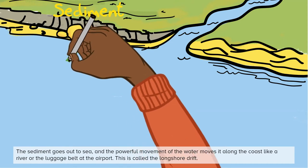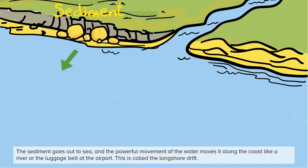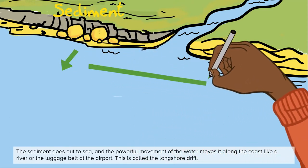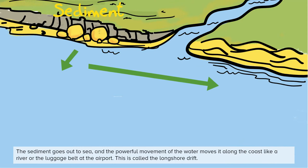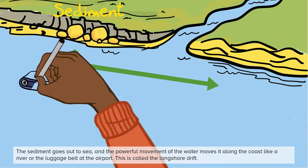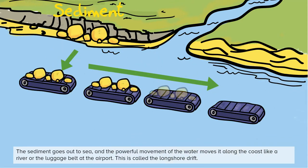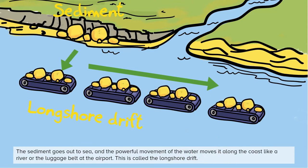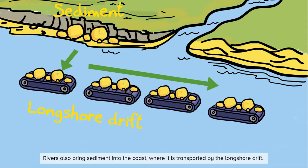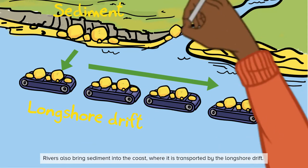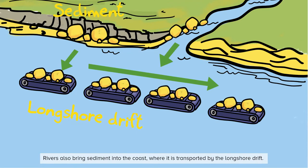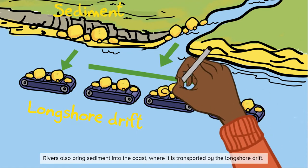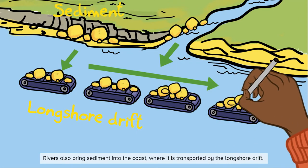The sediment goes out to sea and the powerful movement of the water moves it along the coast, like a river or a luggage belt at an airport. This is called a longshore drift. Rivers also bring sediment into the coast, where it is transported by the longshore drift.